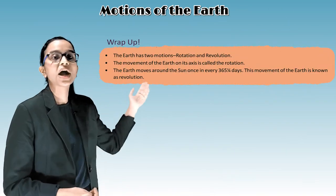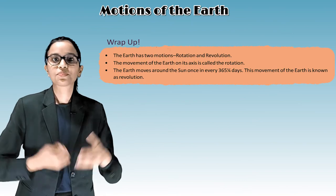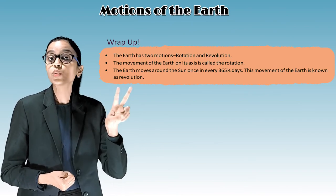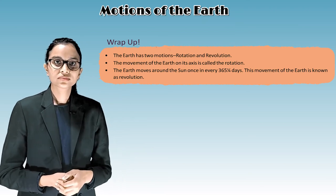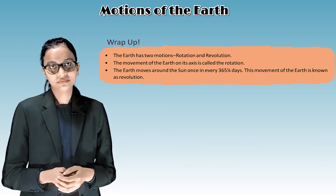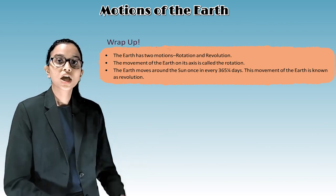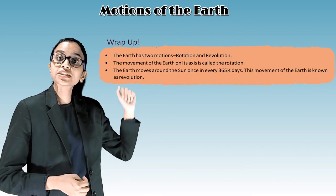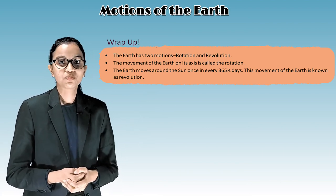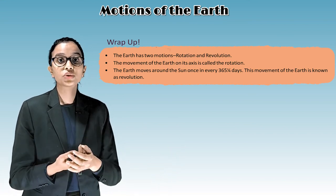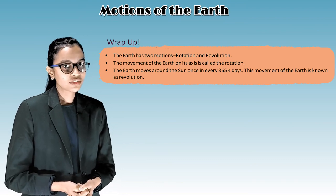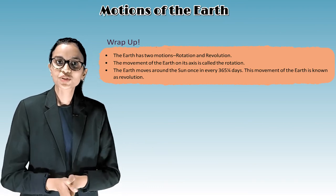It's time to wrap up. The earth has two motions: rotation and revolution. The movement of the earth on its axis is called rotation. The earth moves around the sun once in every 365 and one-fourth days — this movement is known as revolution. We'll meet in the next class. Bye.